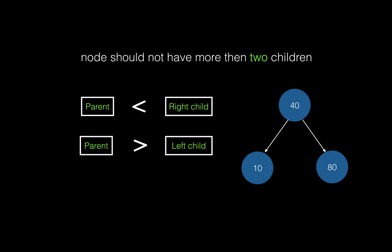The third rule is the value of a parent is always lesser than the value of the right child. If you understand these three rules, it's really easy to insert an element in a binary search tree.